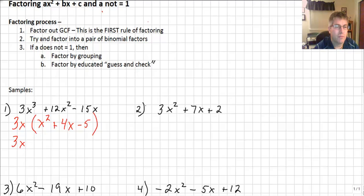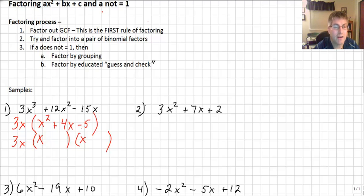We can factor this particular trinomial into a pair of binomial factors. x² will factor into x and x, and now we need factors of negative 5 that add up to positive 4. Since negative 5 is prime, the only factors are 5 and 1 — and that's great because from 5 and 1 we can get 4. So positive 5 and negative 1: we check the linear term — 5x minus x gives us positive 4x. So we factored sample number 1 correctly.